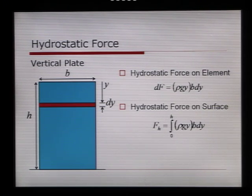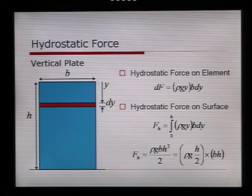And then we're going to sum it from the limits where y equals 0 to y equals h. So this turns out to equal ρgbh²/2, which is broken down and equals ρg(h/2) multiplied by b times h.